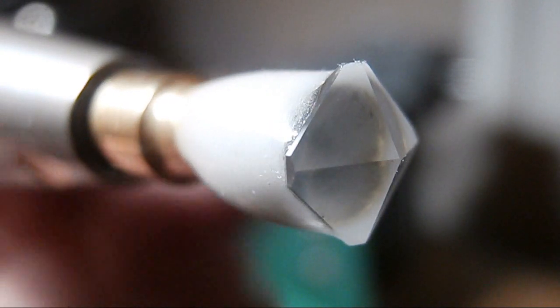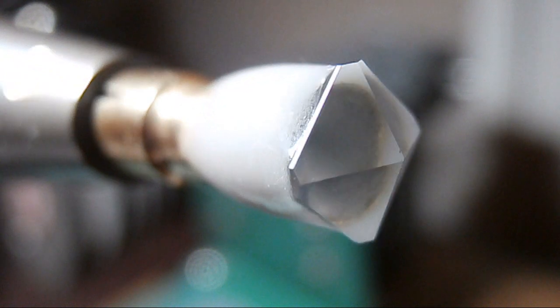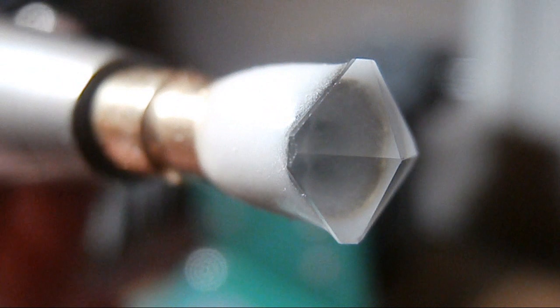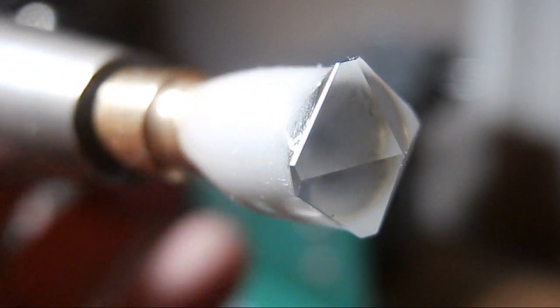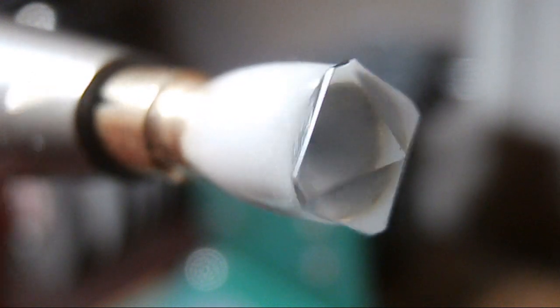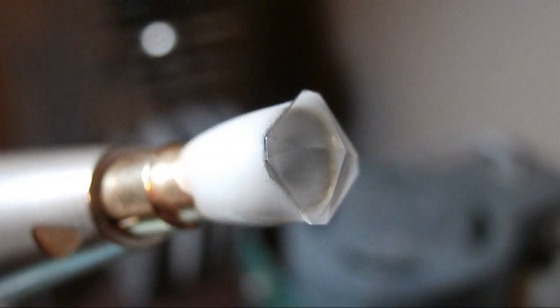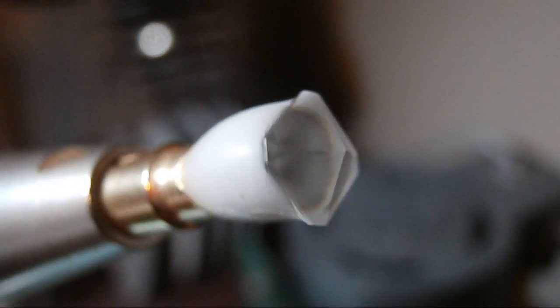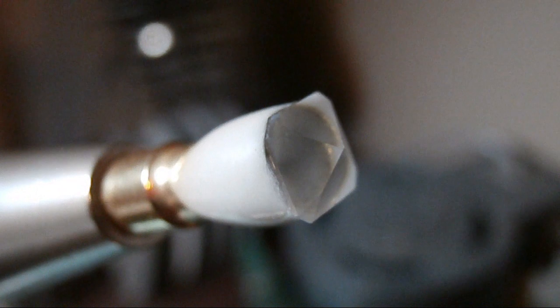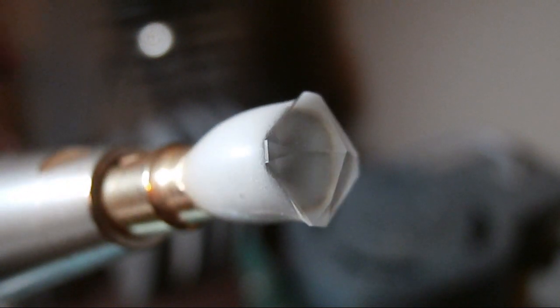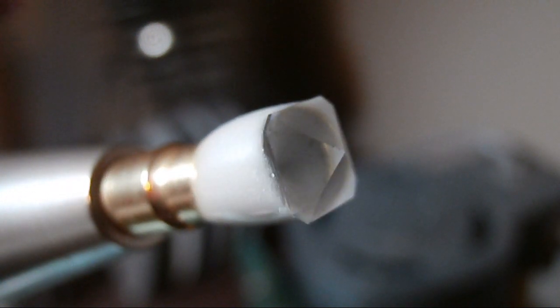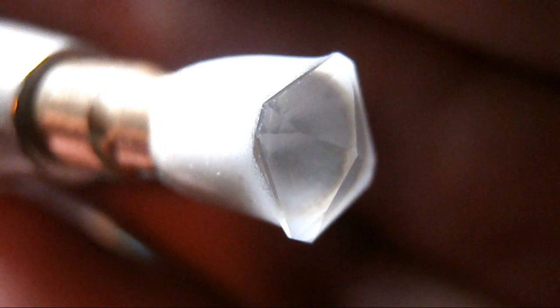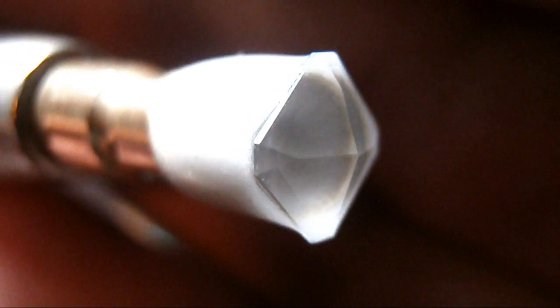In the following scenes you'll see all the crown facets being cut with a 3000 grit diamond disc, including the side facets, corner facets and the table facet.